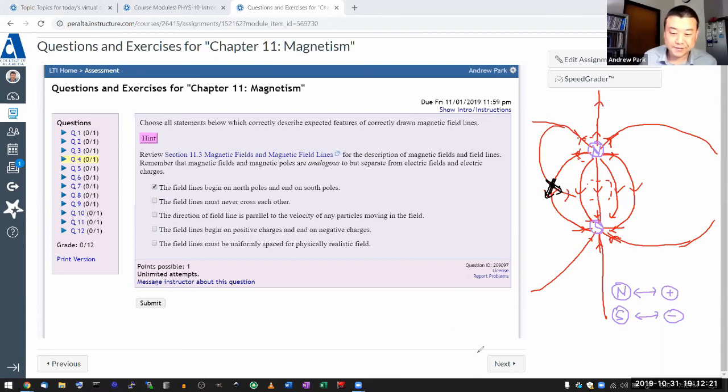They don't cross each other because at the point where they cross, it looks like you have multiple values of magnetic field and that doesn't work.